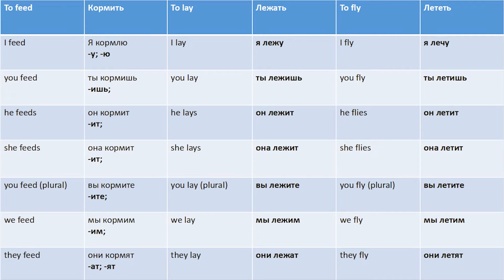And the last one is 'to fly' — лететь. So: I fly — Я лечу, again with the ending -у. You fly — Ты летишь. He flies — Он летит. She flies — Она лечит. You fly (plural) — Вы лечите. We — Мы лечим. And they fly — Они лечат.